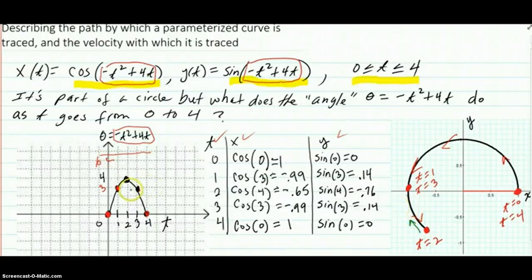And that's because the angle, which is a parabola over here, is going up with values until 4 and then coming back down.